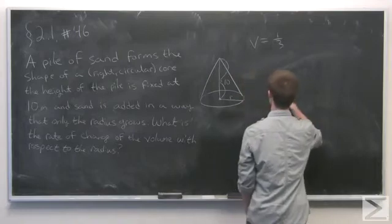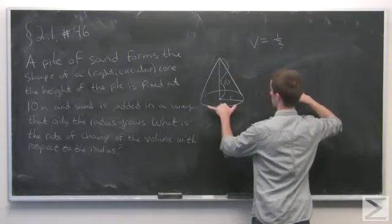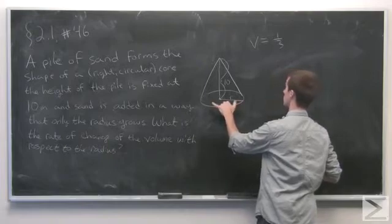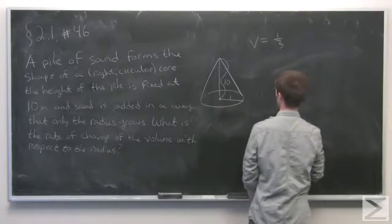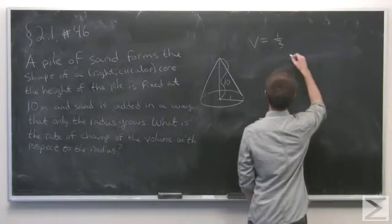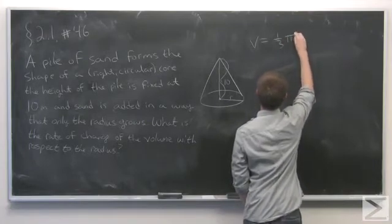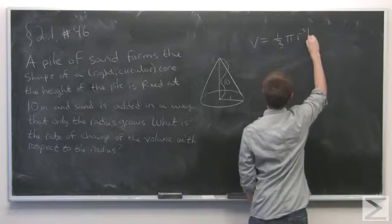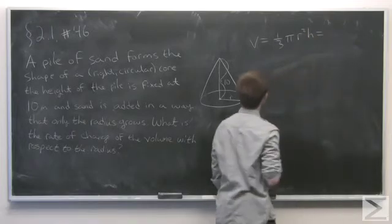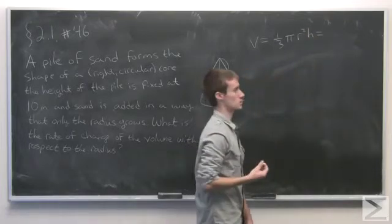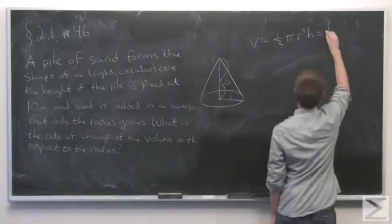So in other words, the volume of the right circular cylinder with radius r and height h. So one third π r squared times h. But in this case, h is fixed at 10 meters.